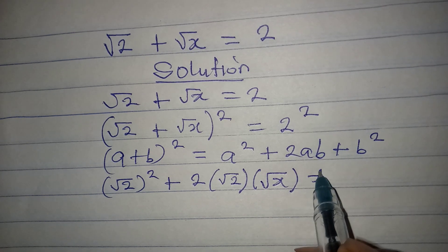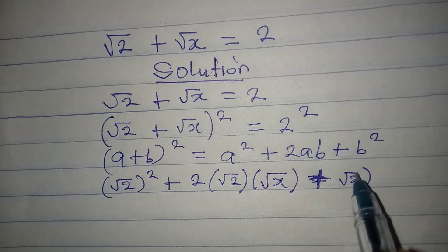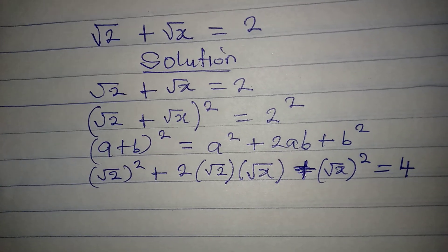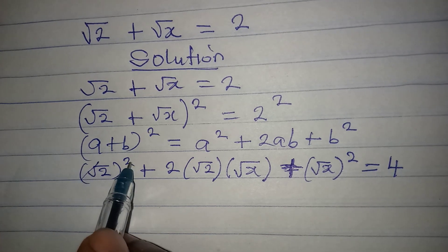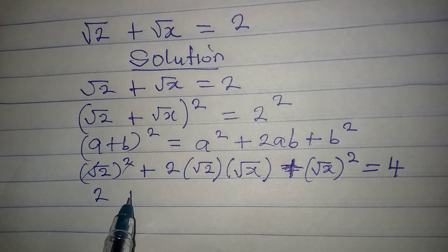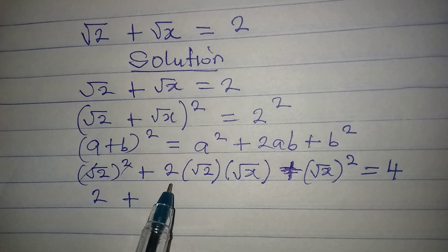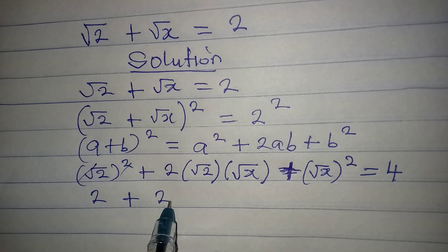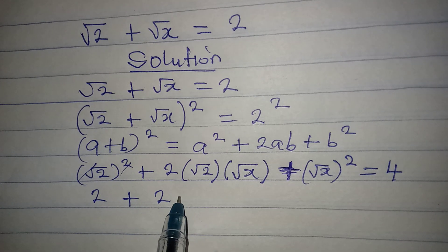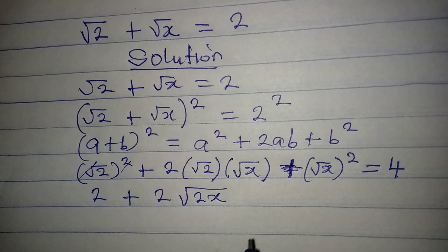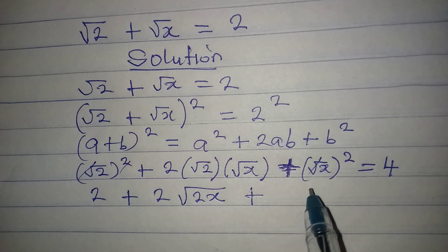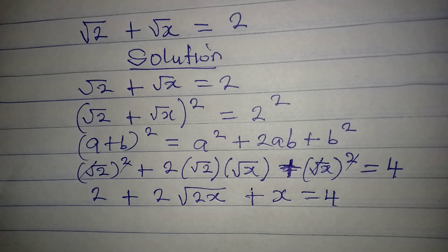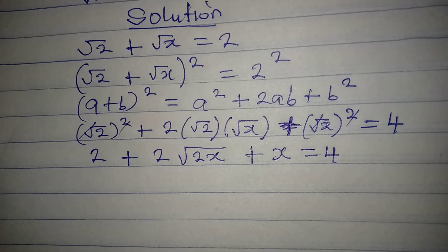Then we add b² which is root x squared. This equals 4 (2 times 2). Now root 2 squared cancels to give 2 alone. Then we have 2 root 2 multiplied by root x, which gives 2 root 2x. And the square root squared cancel to give x. This will be equal to 4.